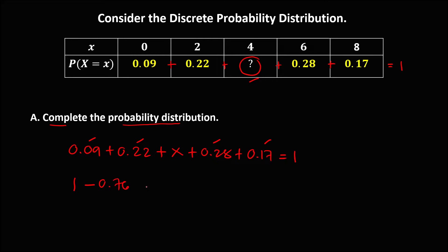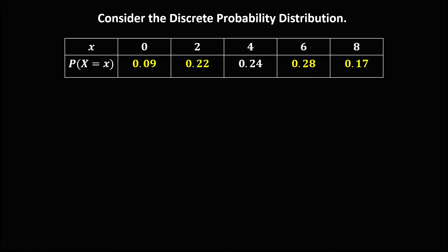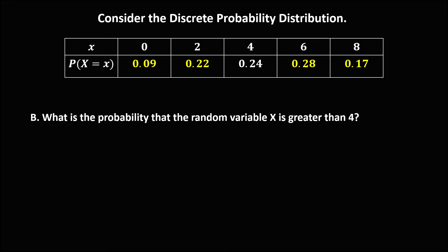So 1 minus 0.76 gives us the unknown probability equal to 0.24. Now, to find the probability that the random variable X is greater than 4: x equals 4, and the numbers greater than 4 are the values we need. So we add those probabilities: 0.28 plus 0.17.